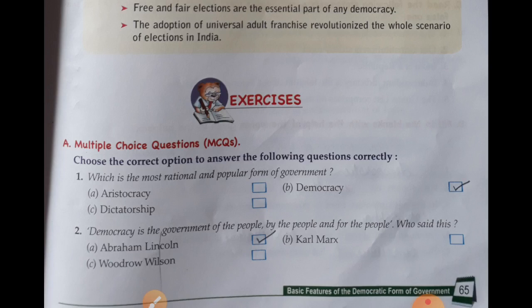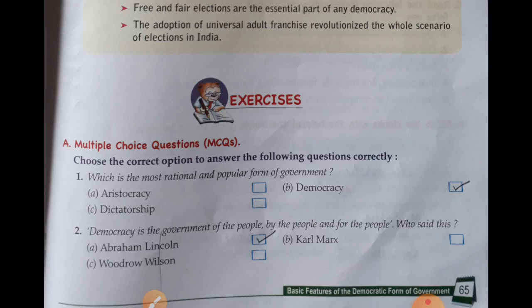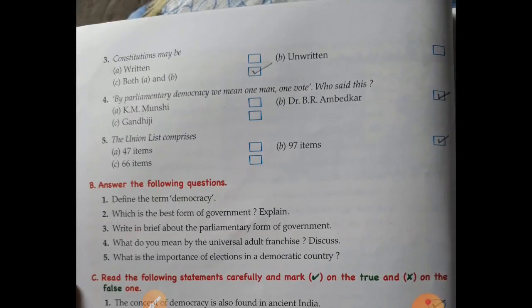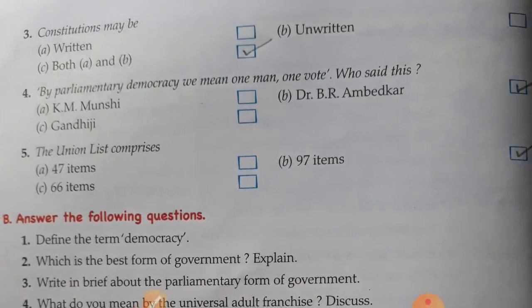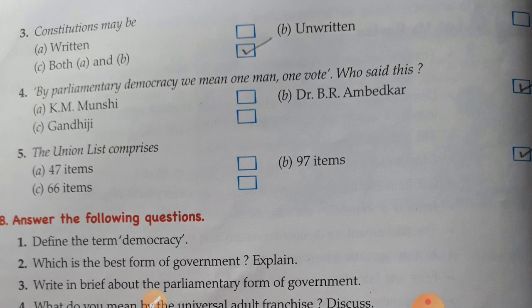Second: democracy is the government of the people, by the people and for the people. Who said this? Abraham Lincoln. Next page: constitution may be written or unwritten — both A and B. Next: the parliamentary democracy remains one man, one vote. Who said this? Dr. B. R. Ambedkar.